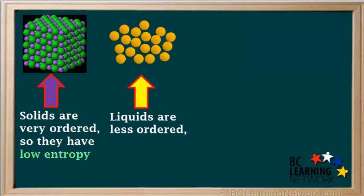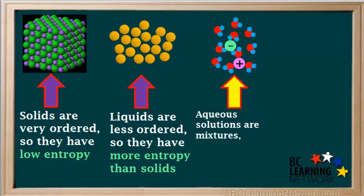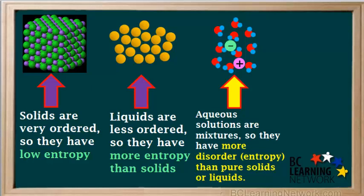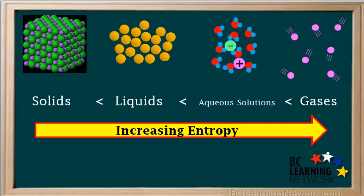Liquids are a little less ordered than solids. The particles are still close together, but they're not lined up in even rows, and in a liquid, particles can move past one another freely. Since liquids are less ordered than solids, they have more disorder or more entropy. Aqueous solutions are mixtures. Like a liquid, the particles can move freely past one another. Because an aqueous solution contains more than one type of particle, it is more disordered than a pure liquid. Therefore, aqueous solutions have more entropy than pure liquids. In a gas, the particles are quite far apart, spread out through a large volume, moving much faster and in a totally random fashion. This means that gases have the highest entropy of all the phases. So entropy increases as we go from a solid to a liquid, to an aqueous solution, and finally to a gas.